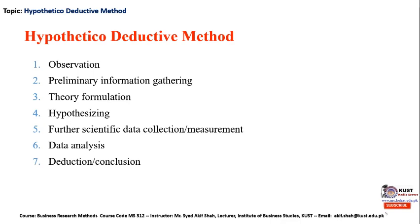Now let's discuss the hypothetical deductive method in detail. This research process comprises seven steps: first, observation — observing the broad problem area; second, preliminary information gathering; third, theory formulation; fourth, hypothesizing; fifth, further scientific data collection and measurement of variables; sixth, statistical analysis including correlation and hypothesis testing; and seventh, deducing the conclusion.